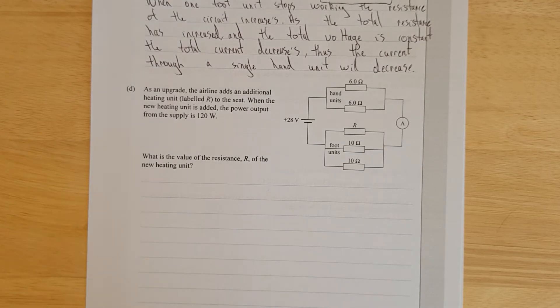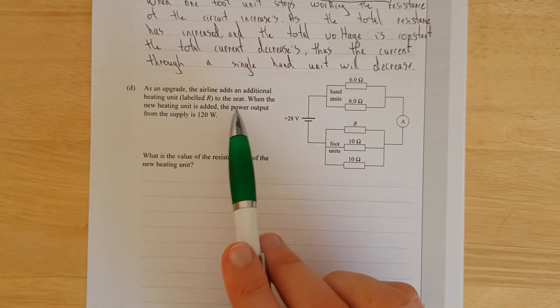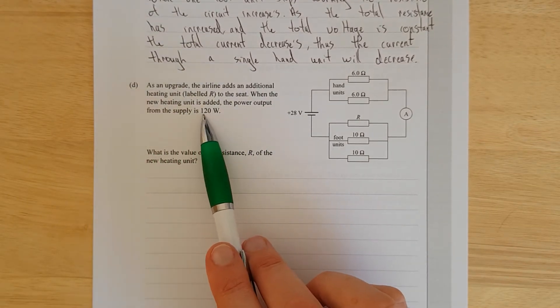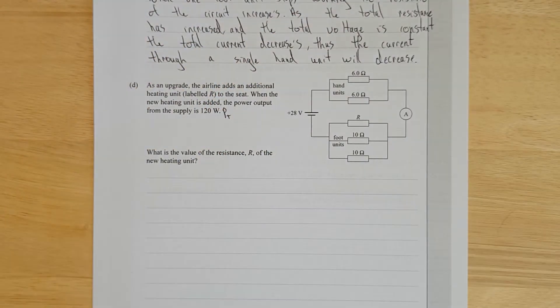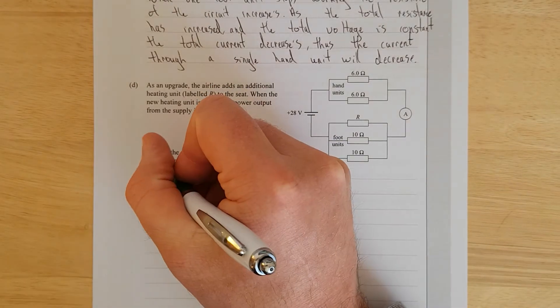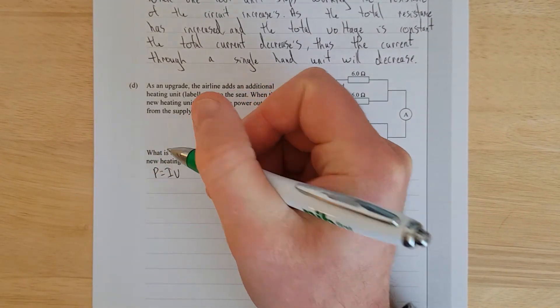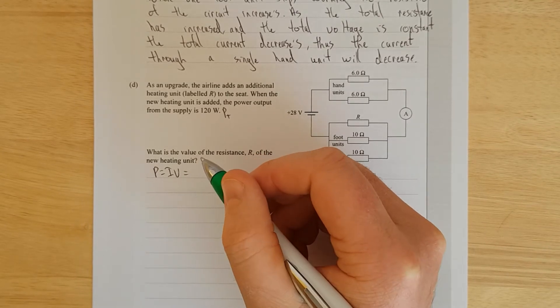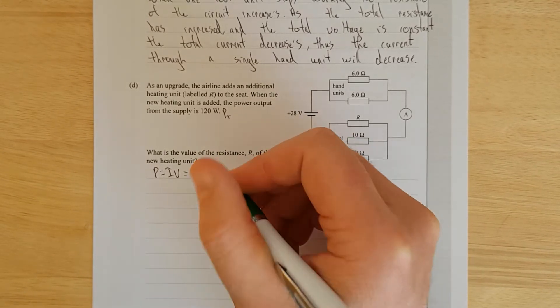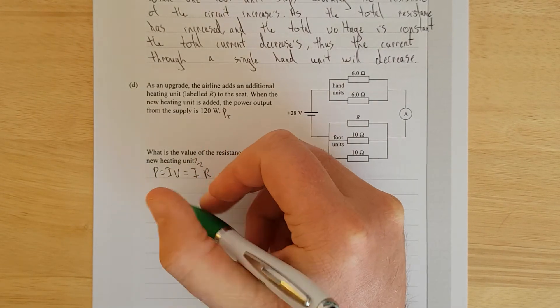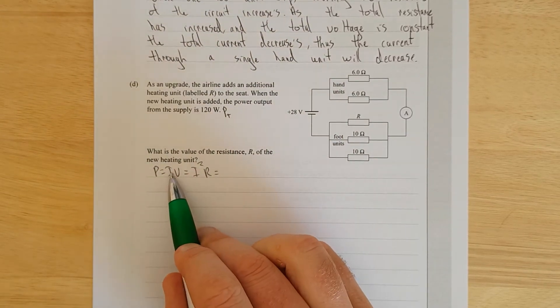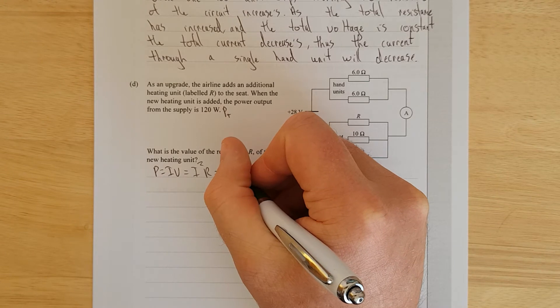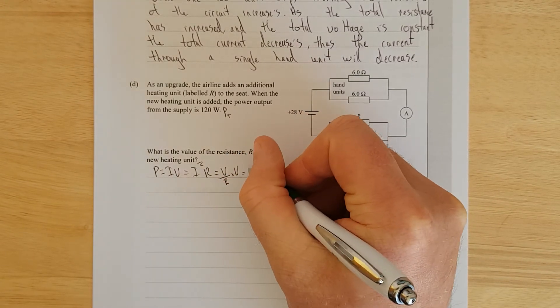Last question. As an upgrade, the airline adds an additional heating unit labelled R. When the new heating unit is added, the power output from the supply, so P_total, is 120. What is the value of the resistance R of the new heating unit? When you've got the power formula, you've got P equals IV, but you can also write this a few different ways. We can have I²R if we substitute in for voltage, or we can have V²/R.